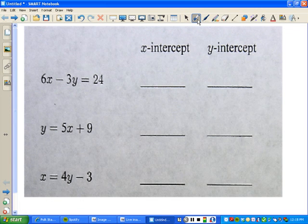Let's take a look at how to find the x intercepts. How do you find the x intercept? To find the x intercept, you want to set y equal to 0. It's very important to do that. So to find the x intercepts in this case, 6x minus 3 times 0 equals 24.